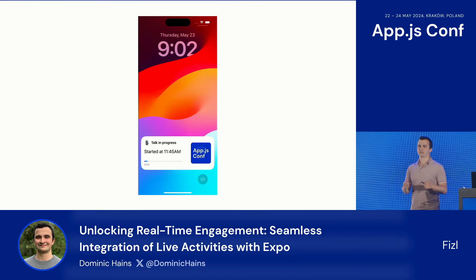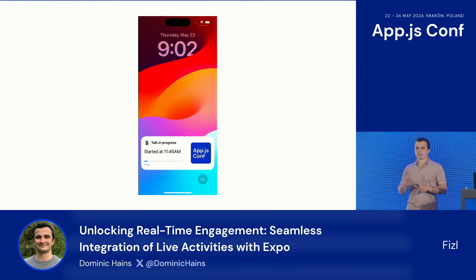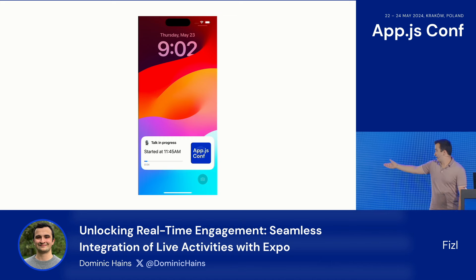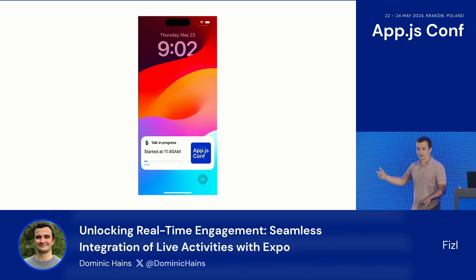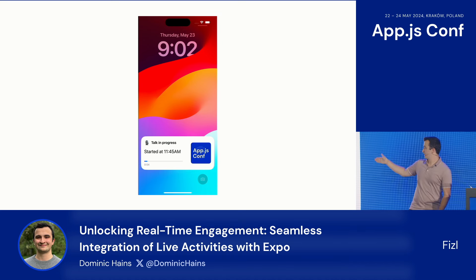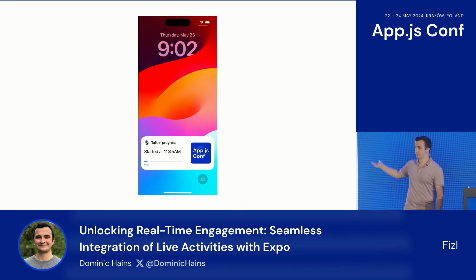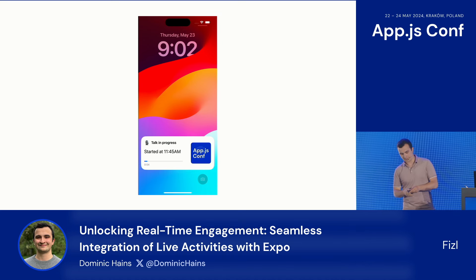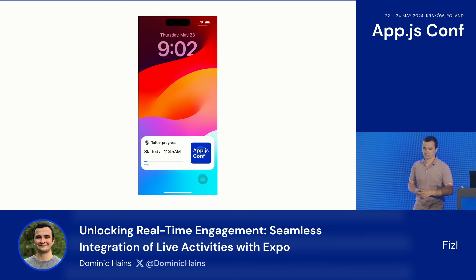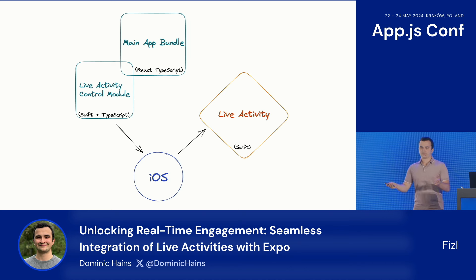What we're going to build today is this live activity. We're going to have a talk, and we're going to be able to start and end the talk. We'll have a little App.js Conf icon as well as a progress bar. This is just a screenshot — I'm going to have a demo at the end of the talk.